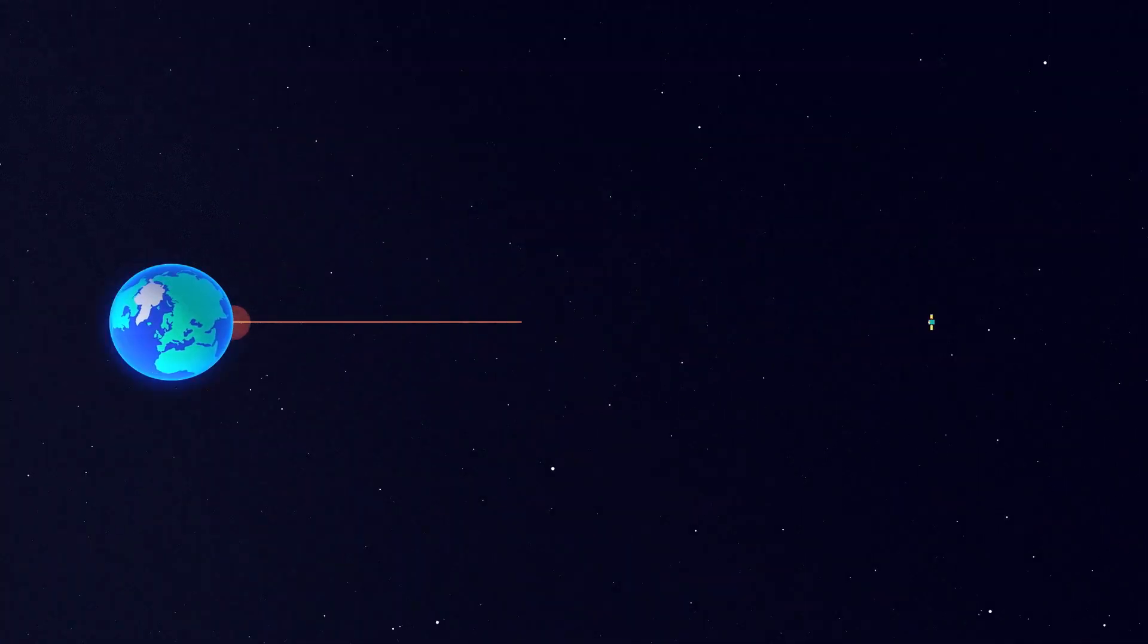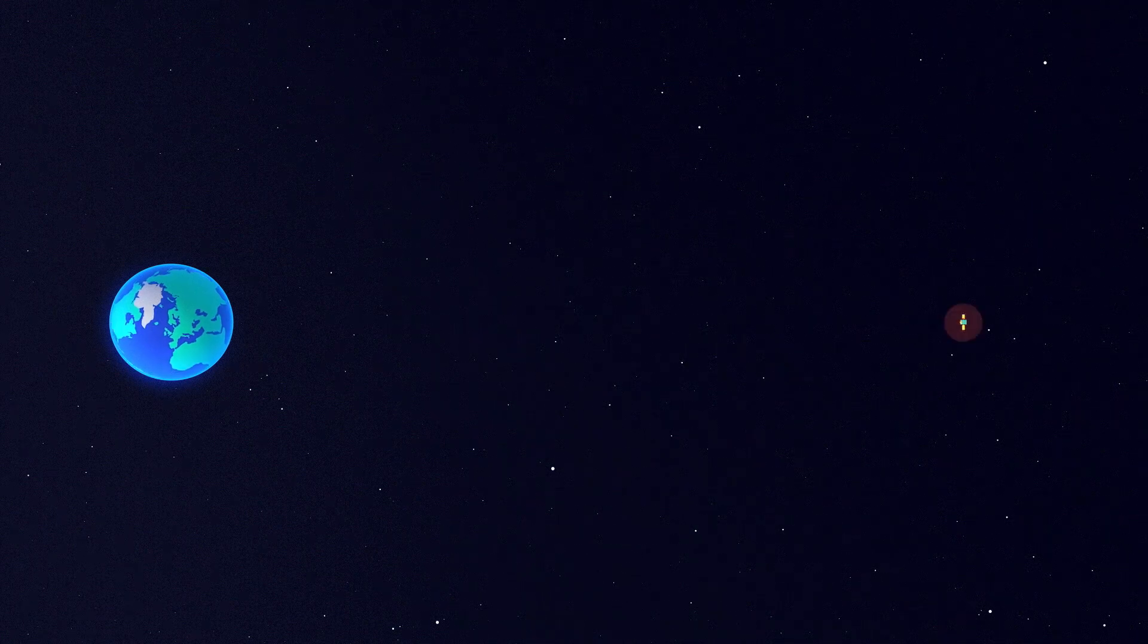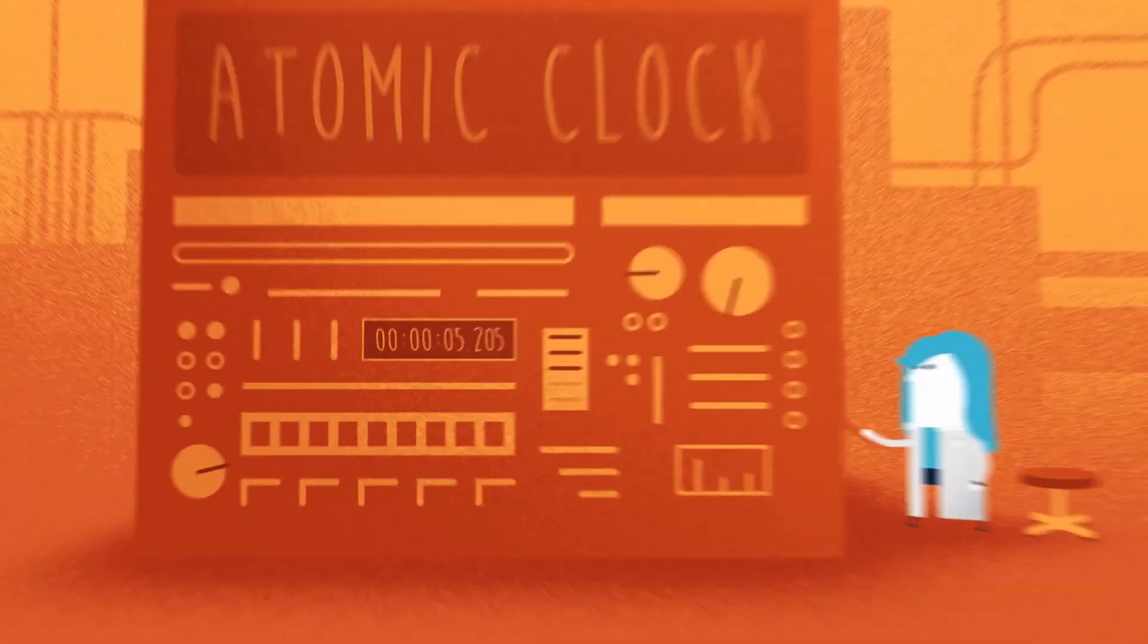Navigators on Earth send a signal to the spacecraft, which receives it and sends it back. Extremely precise clocks on the ground, called atomic clocks,